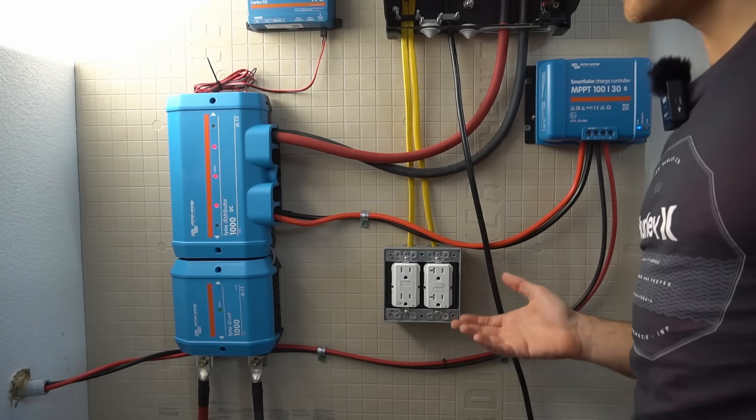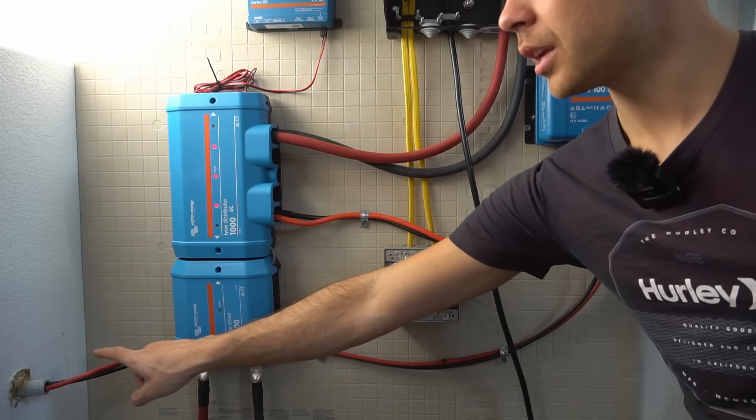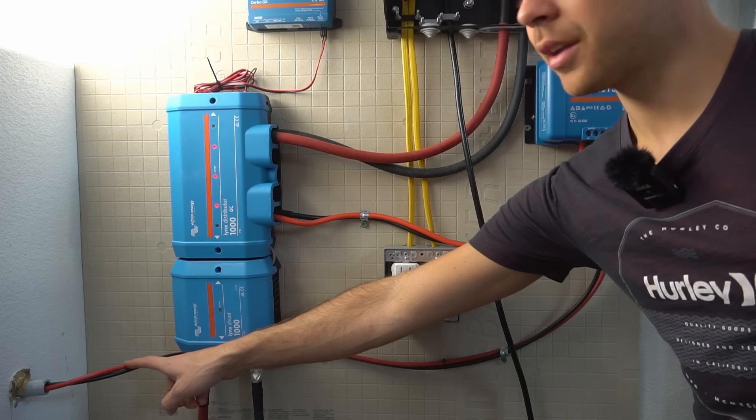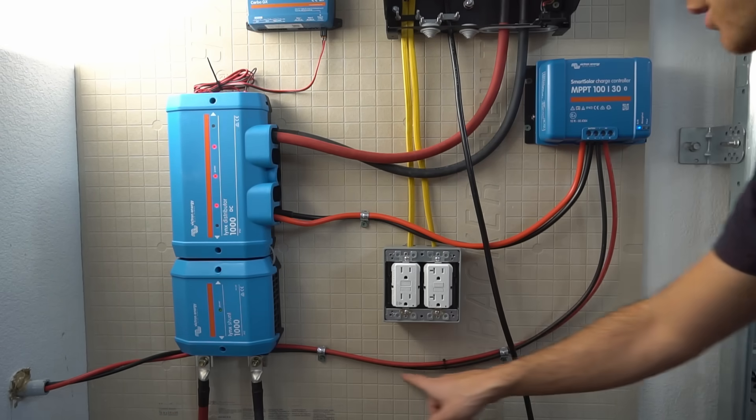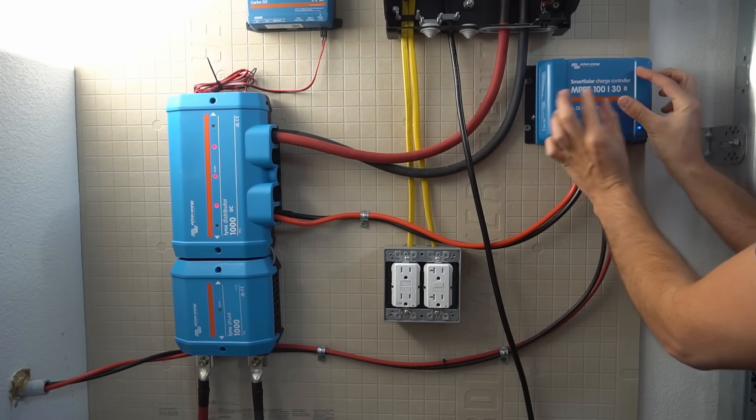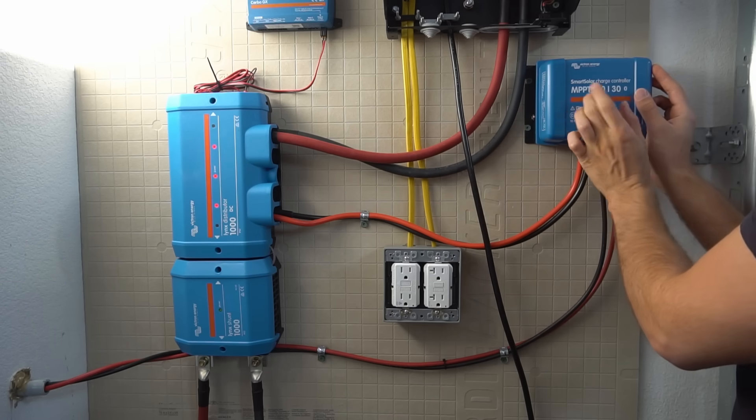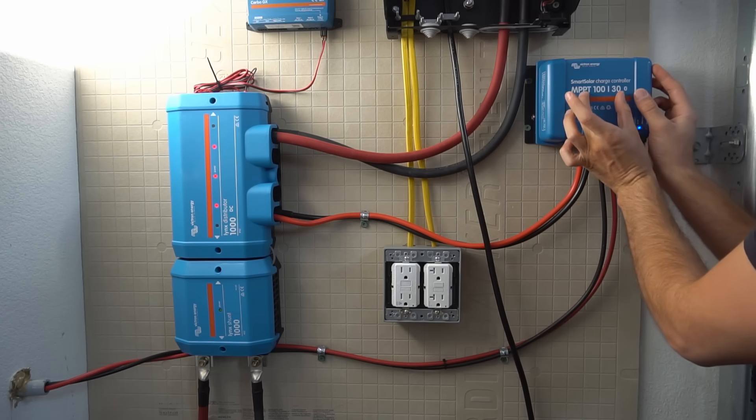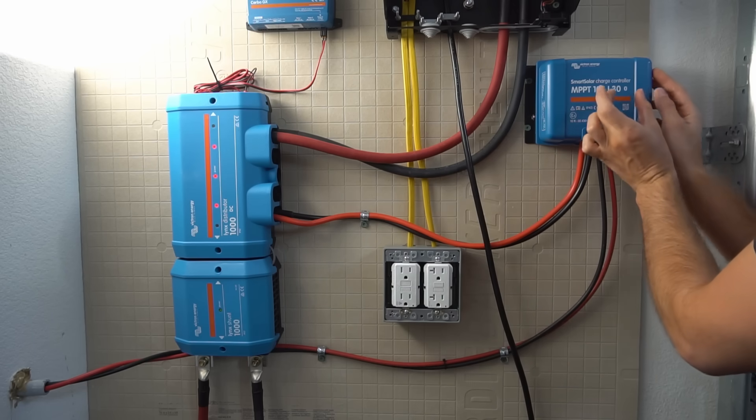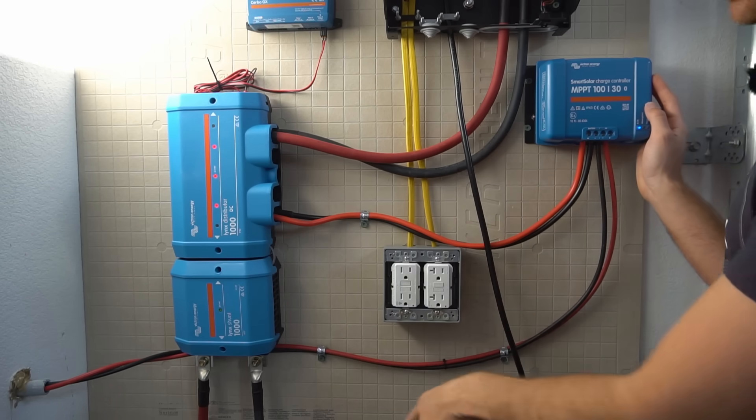Now this system is charged off of solar through these two cables that go outside. These connect to 800 watts of solar panels that are mounted on the ground. These are connected to the smart solar charge controller that's called the MPPT-130. And the 100 refers to the maximum voltage open circuit that your solar panel array can be.